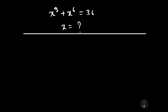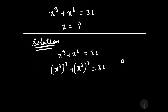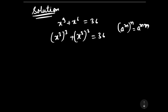Let us start to solve this question. Our question is x to the power 9 plus x to the power 6 is equal to 36. It can be written as x to the power 3, whole cubed, plus x to the power 3, whole squared, is equal to 36. This is written using the formula: a to the power m to n can be written as a to the power m into n.